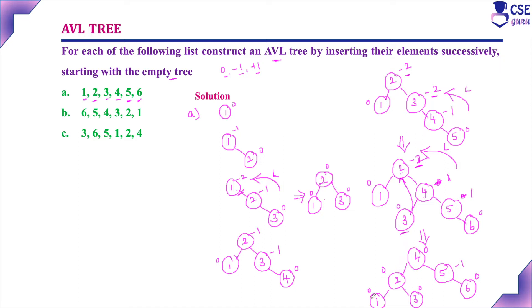Now the balance factor is satisfied and the binary search tree property is also satisfied — all elements in the left subtree are less than the root node and all elements in the right subtree are greater. This is the tree we get for the first problem.